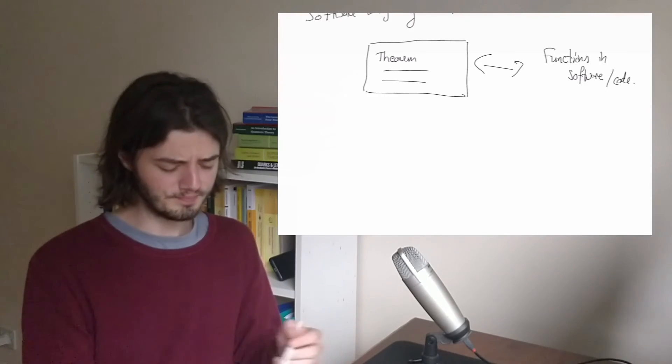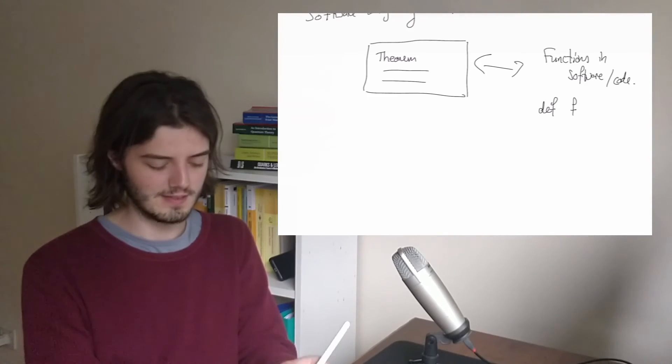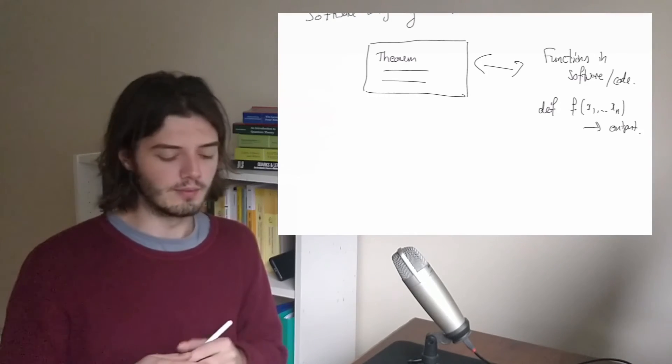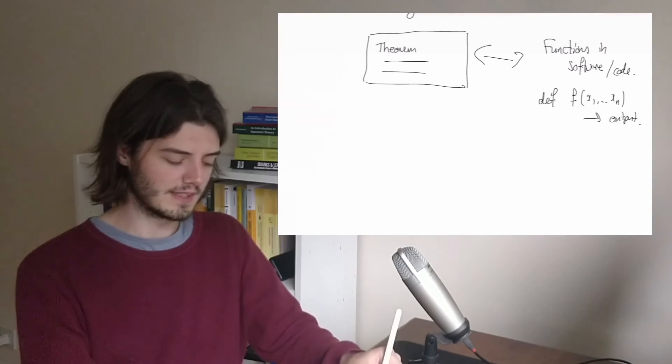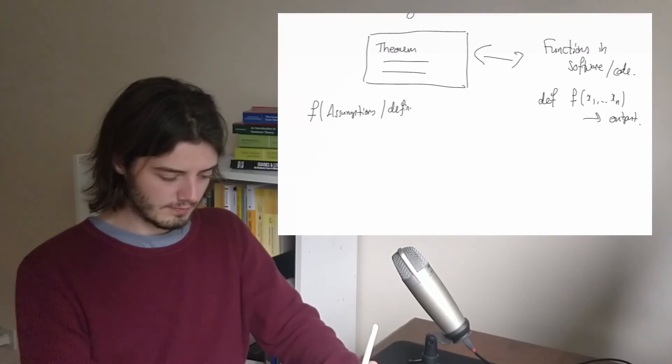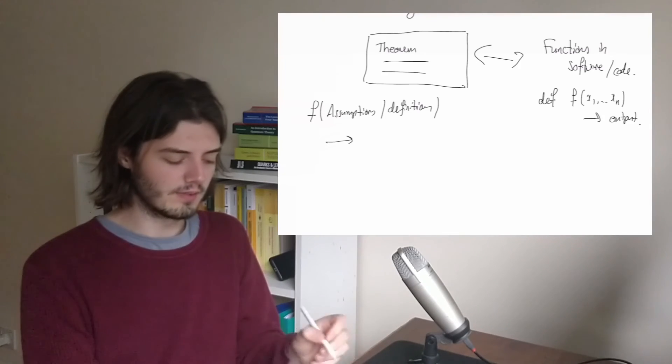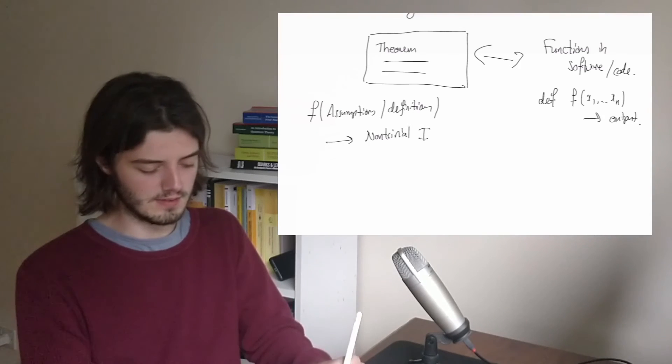For functions you have, say in Python it'd be written like def f, and it would take a load of inputs and then it's going to return some output. With the Zettelkasten notes, you're really taking assumptions and definitions as your input, or say axioms basically, and then you're giving out some kind of non-trivial implications of these assumptions.